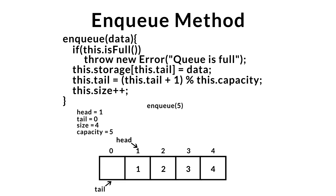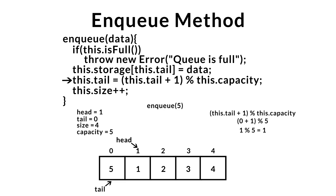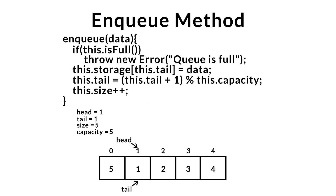Executing our NQ method once more. The is-full check fails, so we store the data at our tail index. We calculate the new tail index: tail is currently zero, zero plus one gives one, one modulus five gives a remainder of one. We increment the size. As you can see, our size and capacity are now both equal, so if we were to run NQ once more, isFull would evaluate to true, throwing an error that our queue is full.